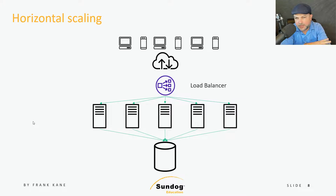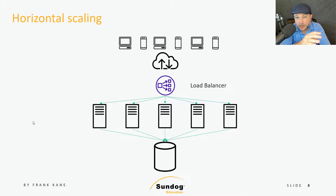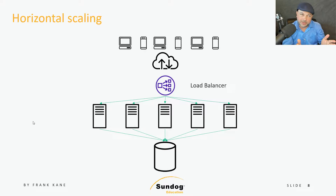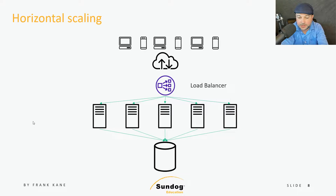With horizontal scaling, you can scale practically infinitely — the more servers you throw in there, the more traffic you can handle. There are finer points about geographic location and data centers, but the basic idea is that adding more servers to the fleet handles millions of transactions. The downside, of course, is that there's more stuff to maintain.